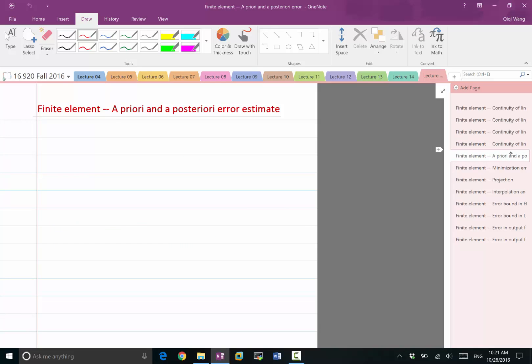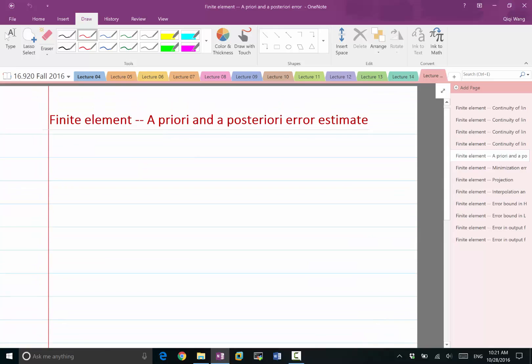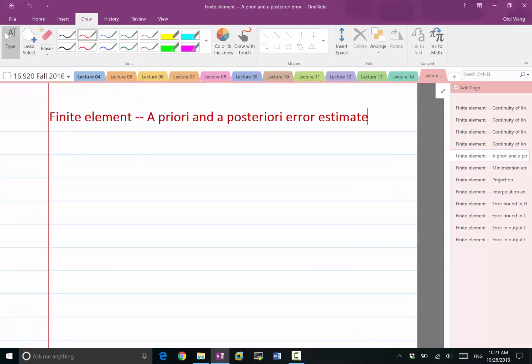Now we can look at error estimation of how much restricting the weak form to a finite dimensional space is going to cause an error in the solution.